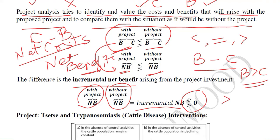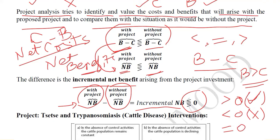On the basis of these three possibilities we can decide whether to undertake the project. If incremental net benefits are greater than zero, it is desirable to undertake the project because the net benefits with the project exceed those without. If incremental net benefits are equal to zero, we are indifferent — we can either proceed or avoid the project, and may include other factors to decide.